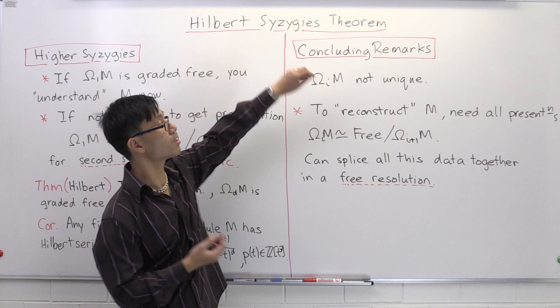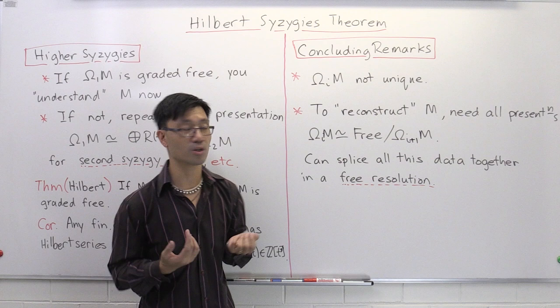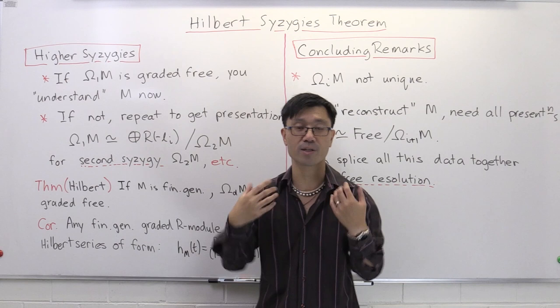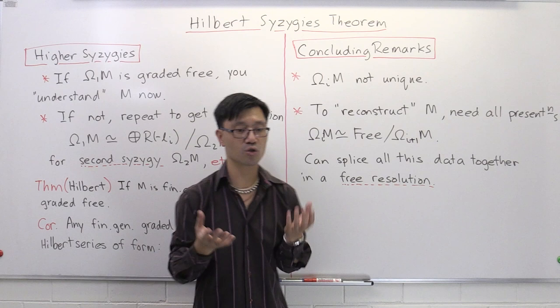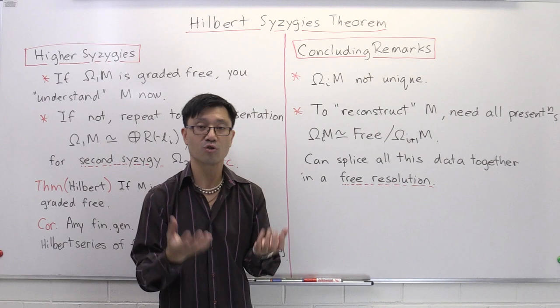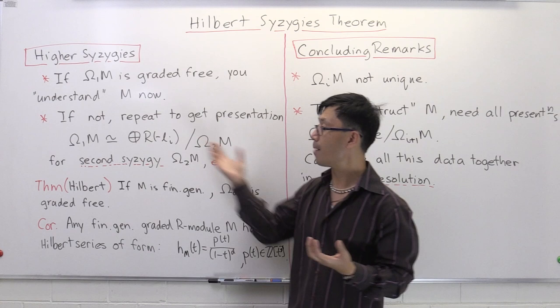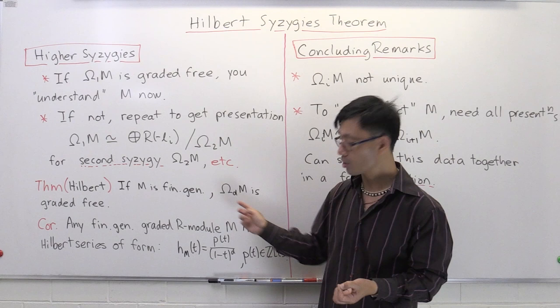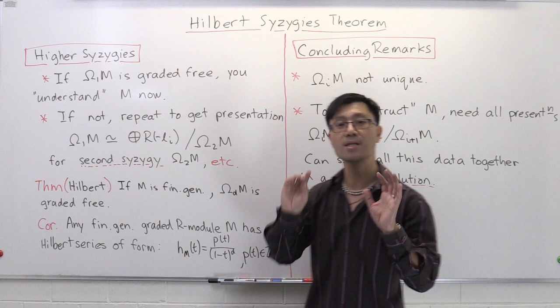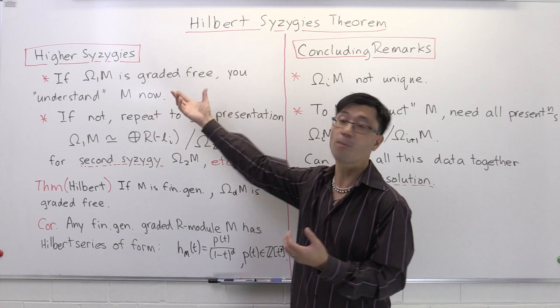Let me make some concluding remarks. First, these i-th syzygies are not unique — just as the first one is not unique, each subsequent one has even more choices. In many ways, these syzygies tell you about the module. It's very similar to triangulating a surface: there are lots of different ways to triangulate it, but the key information you want to extract should always be the same. So it doesn't matter how you set up the different syzygies — if you compute the Hilbert series using this method, you'll always get the same answer. This is a very important and interesting feature of homological algebra.